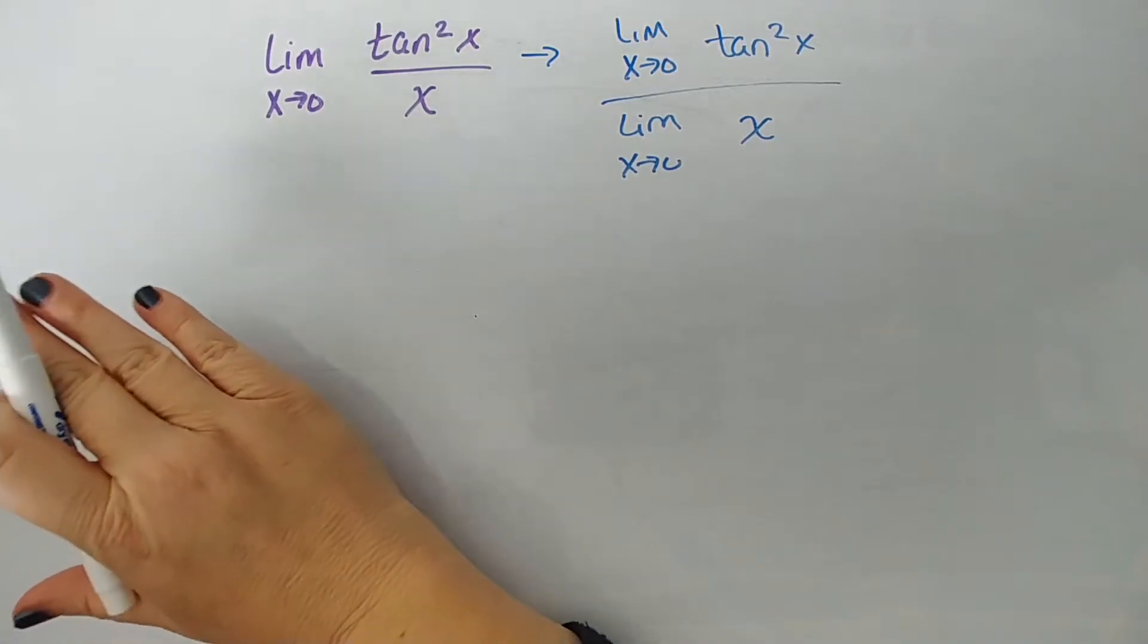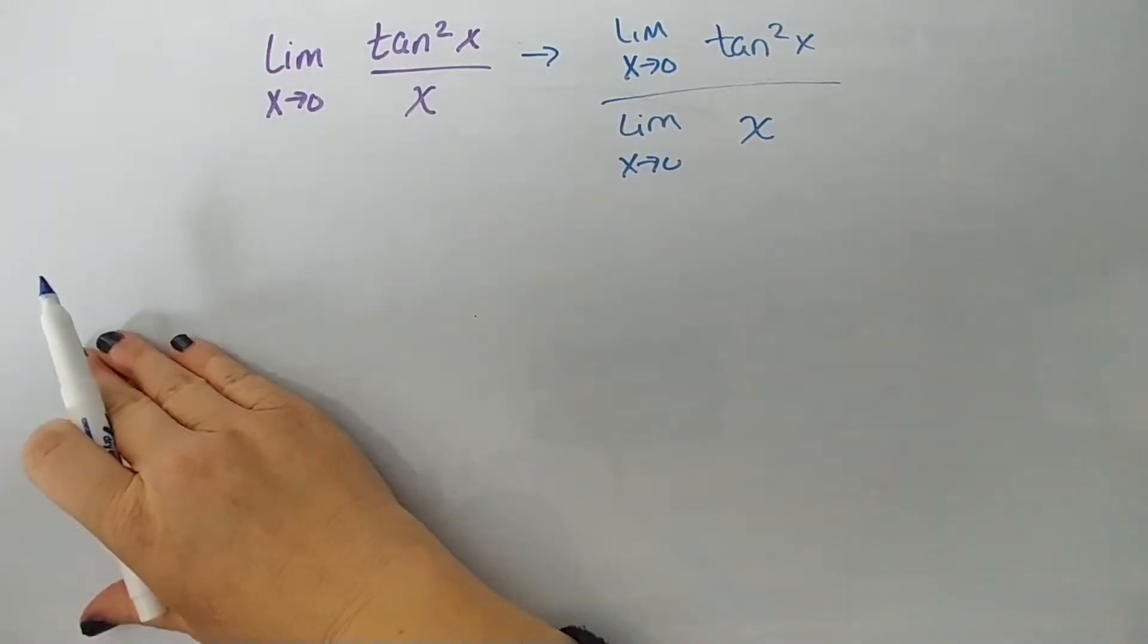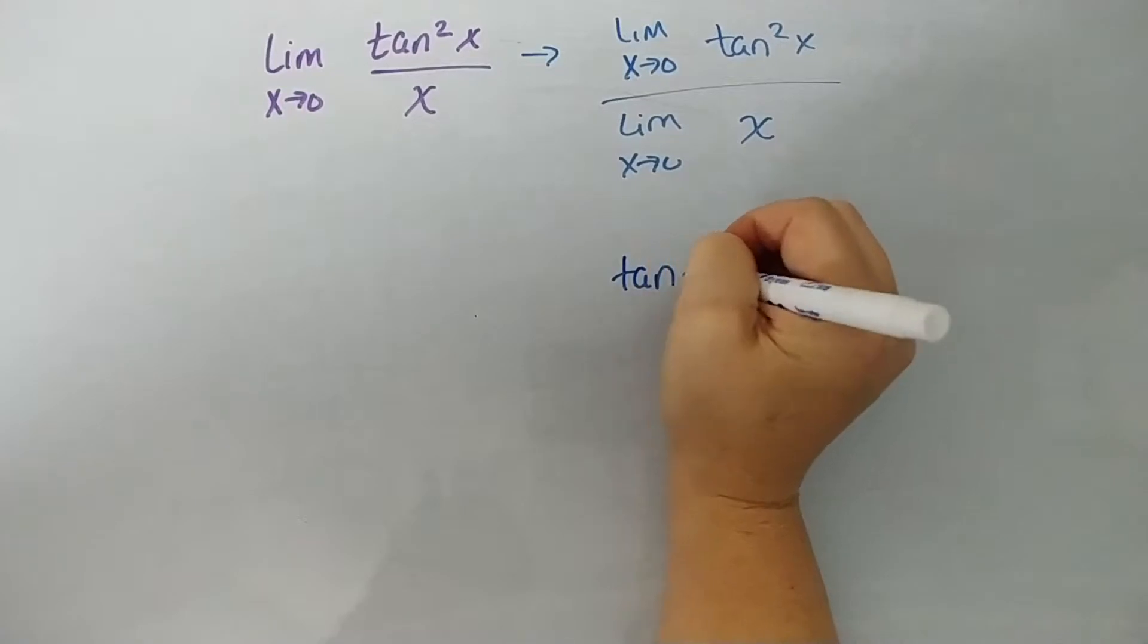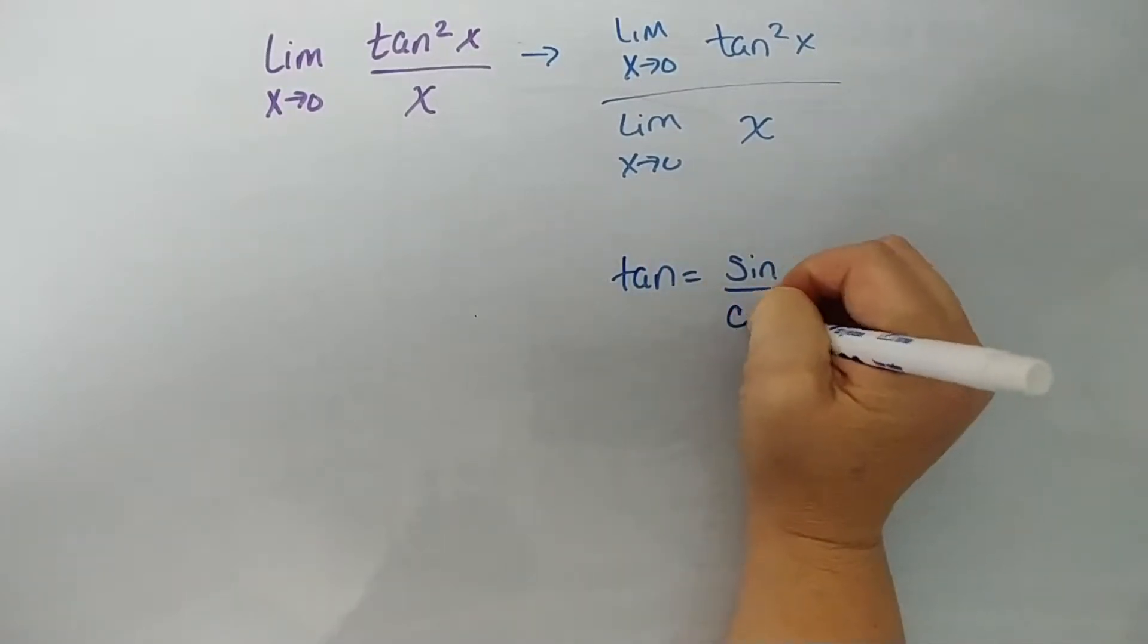So, and the second problem is we really don't want to deal with tangent. Whenever we can, we're going to put tangent in terms of sine and cosine. So let's remember that tangent is equal to sine over cosine. Therefore, tangent squared is sine squared over cosine squared. And let's rewrite it using that, okay?